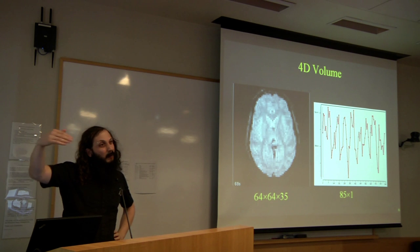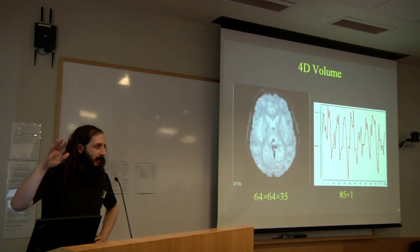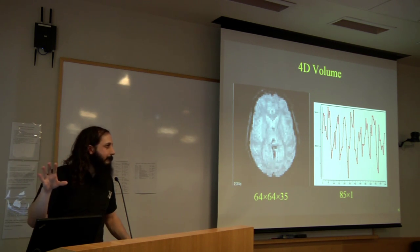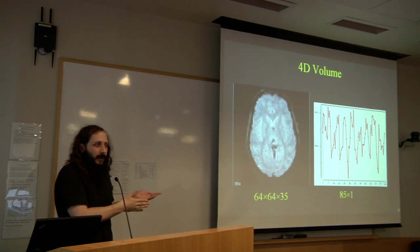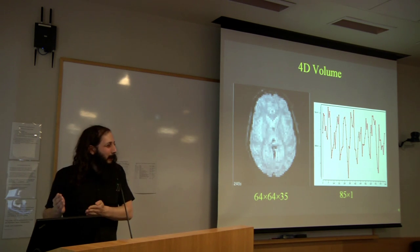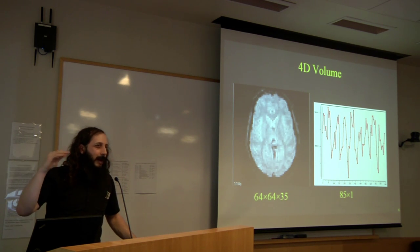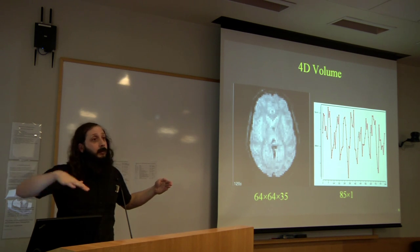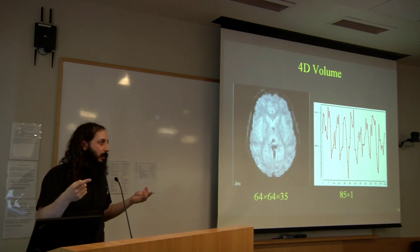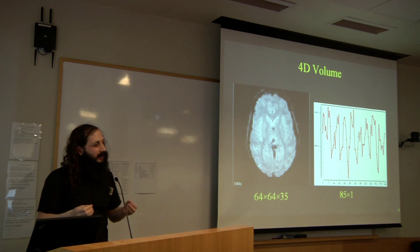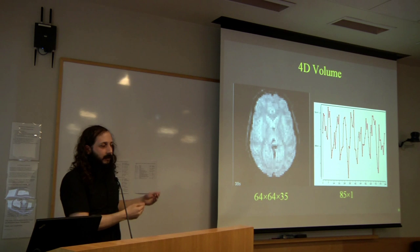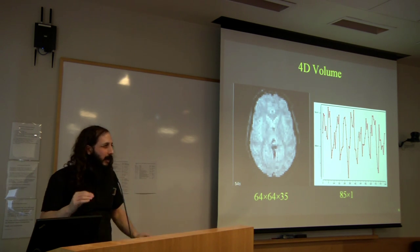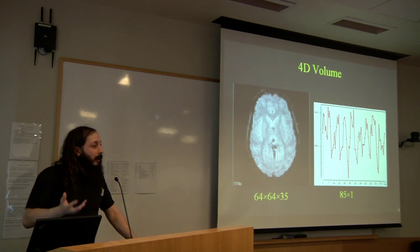If we take a voxel from the visual cortex and plot its time course, with the visual stimulus on for 15 seconds and off for 15 seconds periodically, you can see fluctuations in image intensity that match the known stimulus timing. The whole point of fMRI analysis is to separate out the fluctuations due to our manipulation from fluctuations due to noise. The main question we ask in statistical analysis is: are the fluctuations due to our stimulus greater than the fluctuations due to noise? We're always comparing signal levels to noise levels.